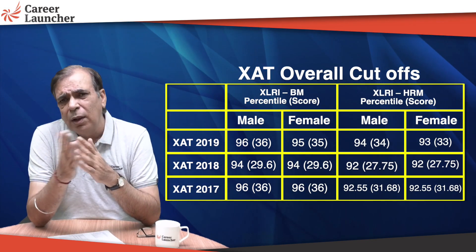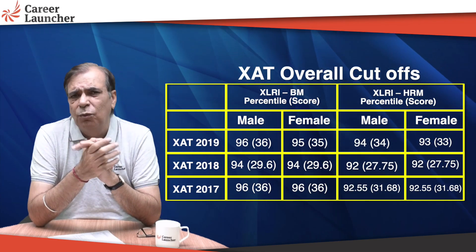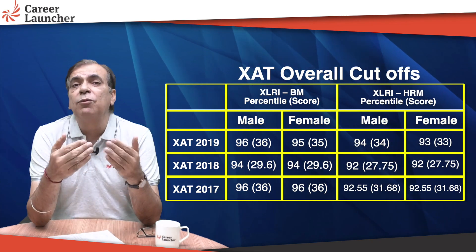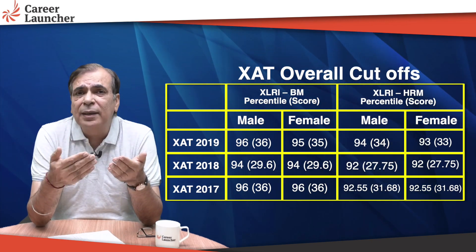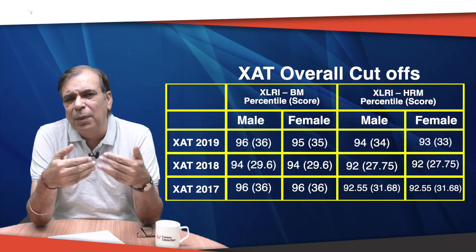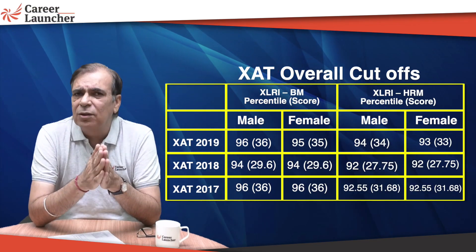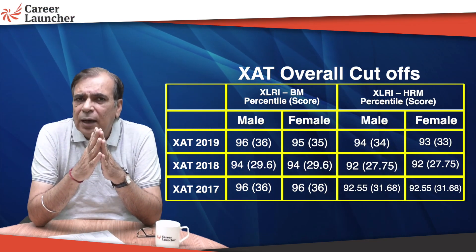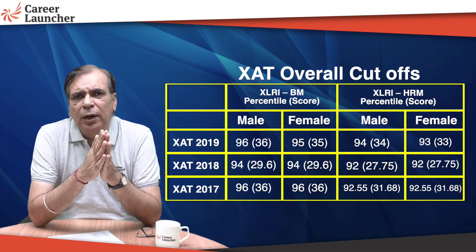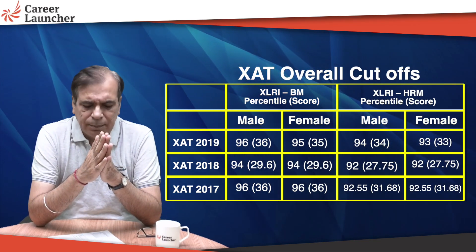The interview call for HRM would be at about 32 to 33 marks. For female candidates, the required score will be about one mark less — the cut-off for BM is likely to be about 34 marks and about 32 marks for HRM.